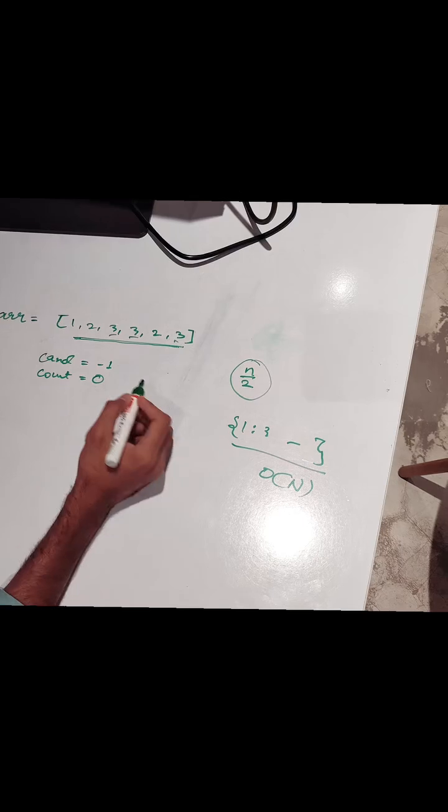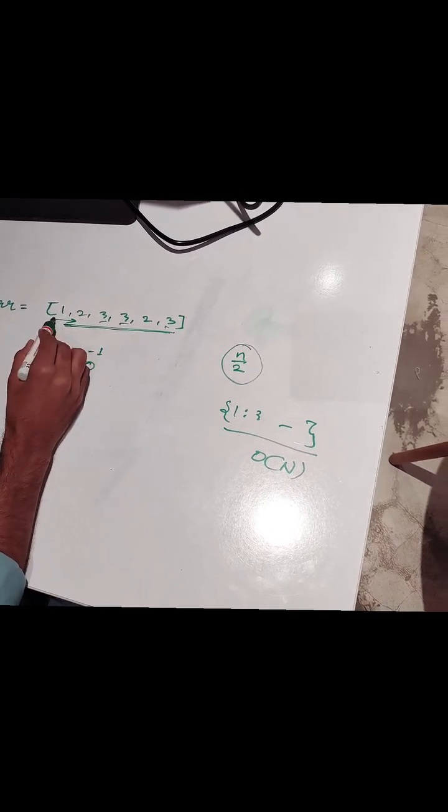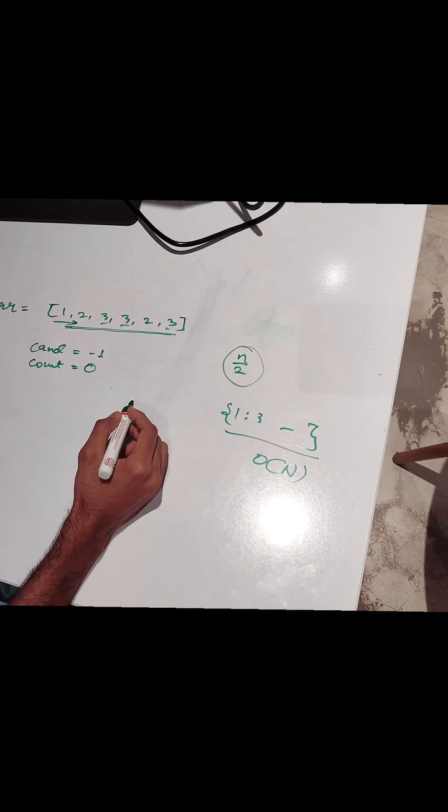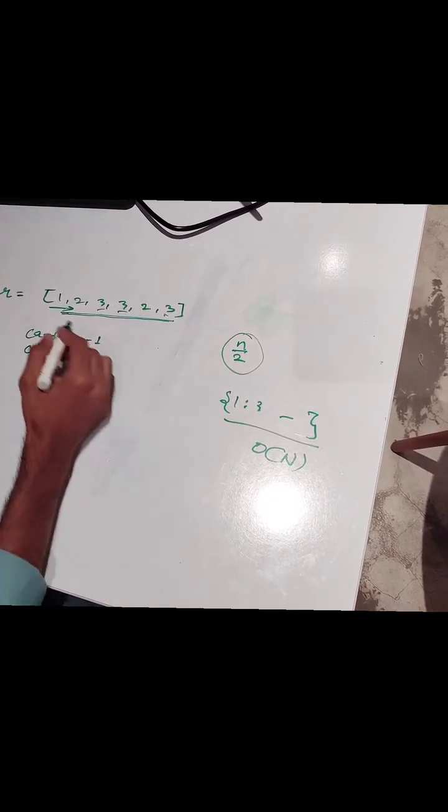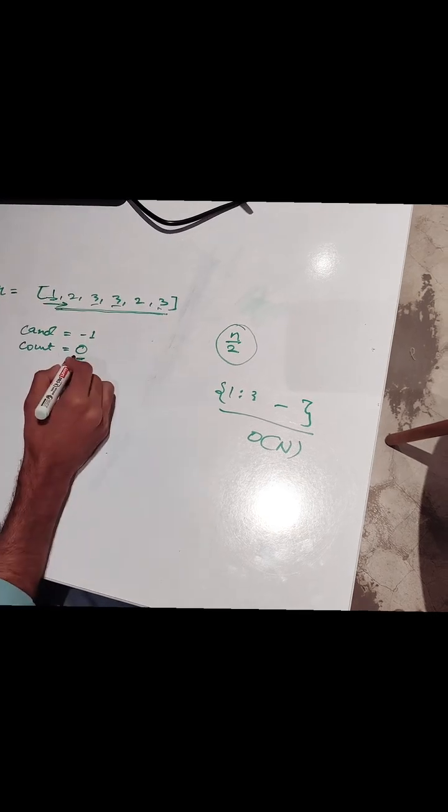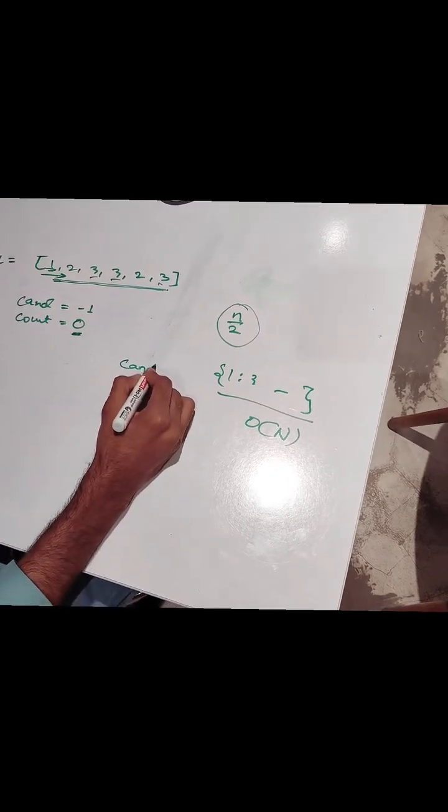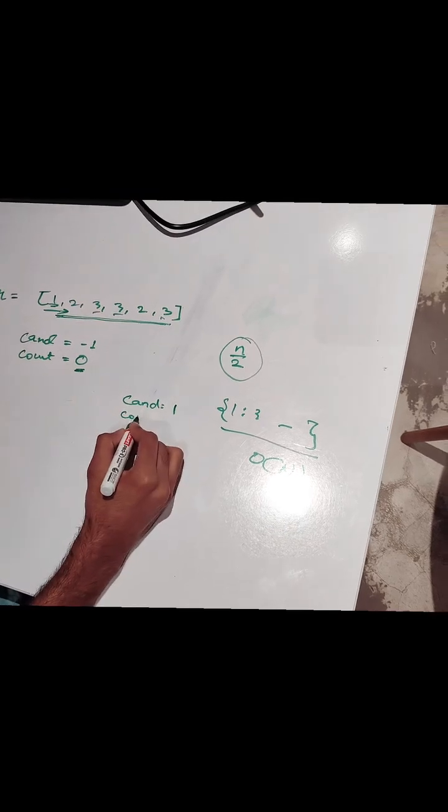So what we do initially? We just iterate through the array and we start counting. So initially what we do? Initially we see if count is 0, we make the candidate that number. For example, if initially count is 0, we make candidate as 1 and count as 1.